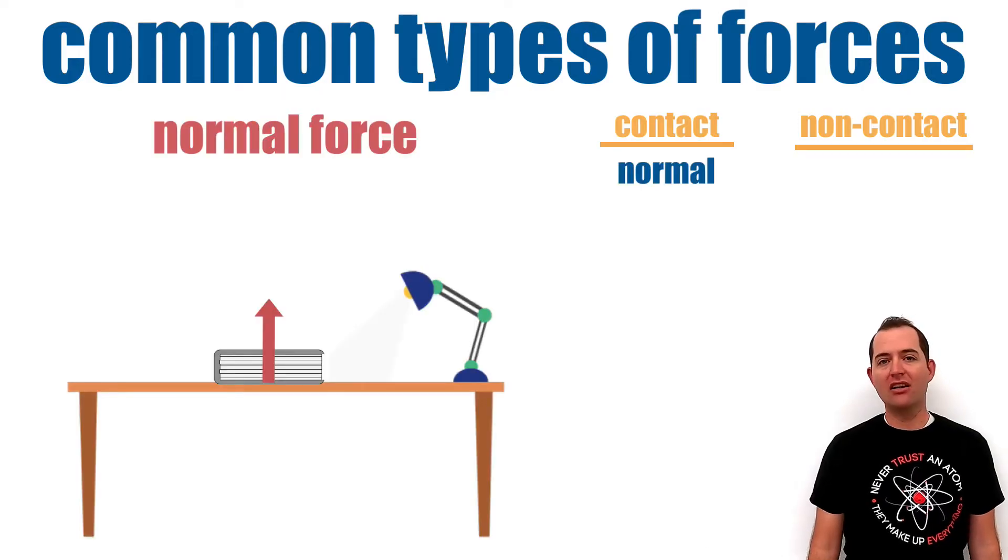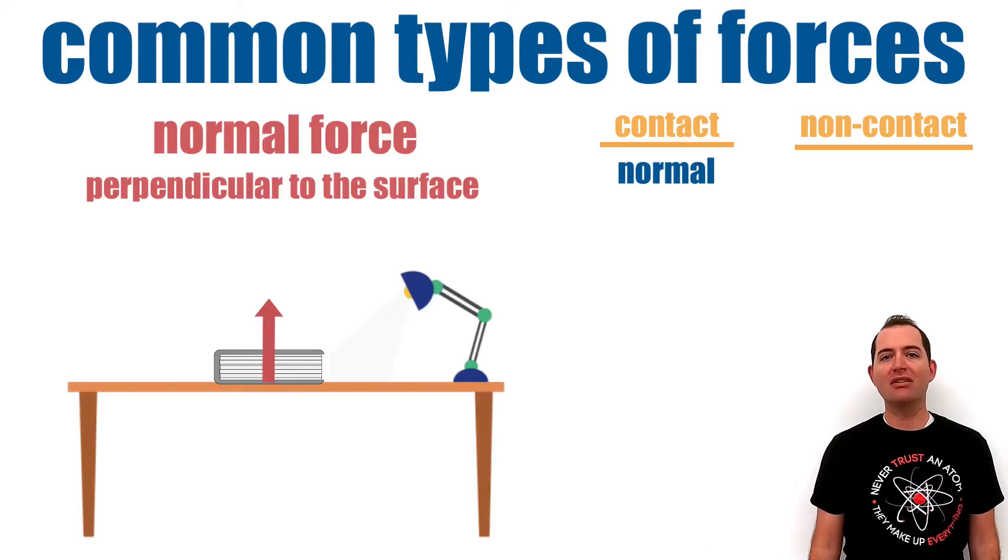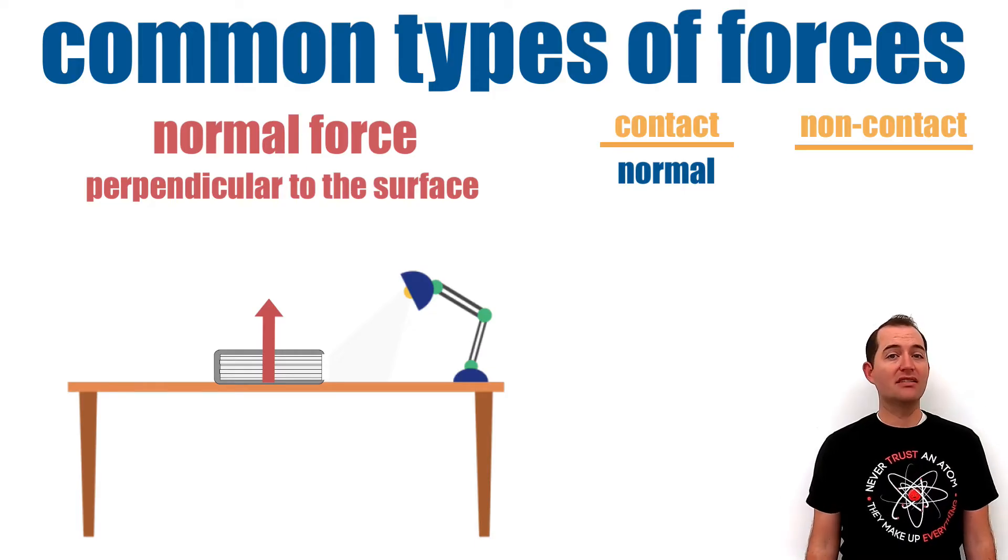The normal force is a contact force that acts perpendicular to the surface that an object contacts. It is the force that solid objects exert on each other to prevent them from passing through each other. For example, a book resting on a table is held in place by the normal force.